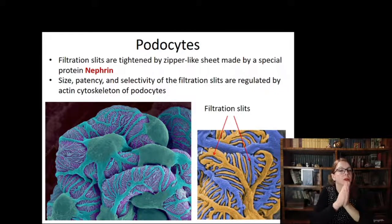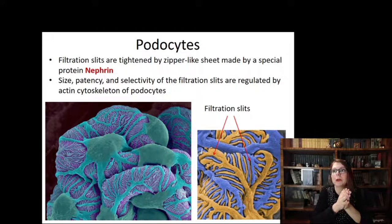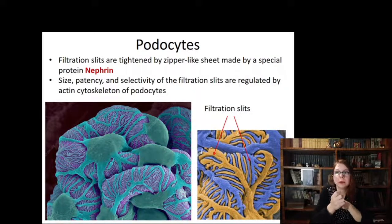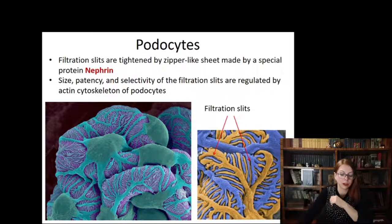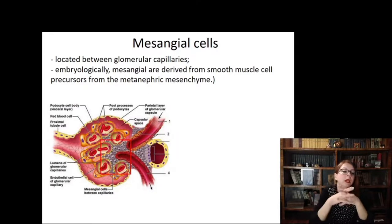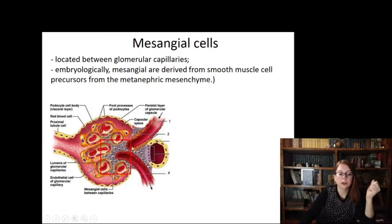With this we complete the discussion of the filtration barrier. Any damage to any component of the filtration barrier results in urine abnormalities; to understand why certain elements appear in the urine, you must know every component and its exact function. Let's move on — after discussing the glomerulus and Bowman's capsule, we must mention one more cell population besides podocytes.